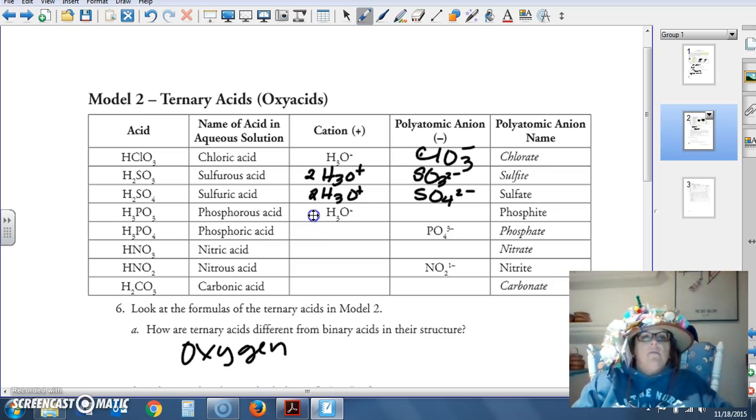Phosphorous, the phosphorous acid, H3PO3. So we'll have three of those hydronium ions. PO3 is phosphite, or anion.